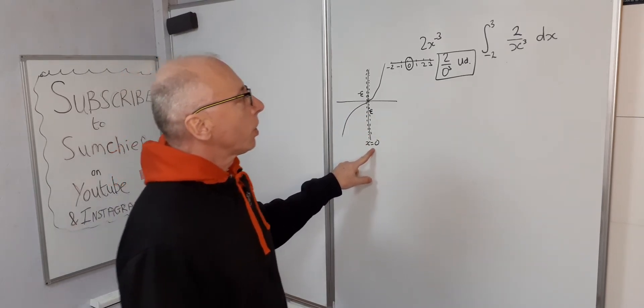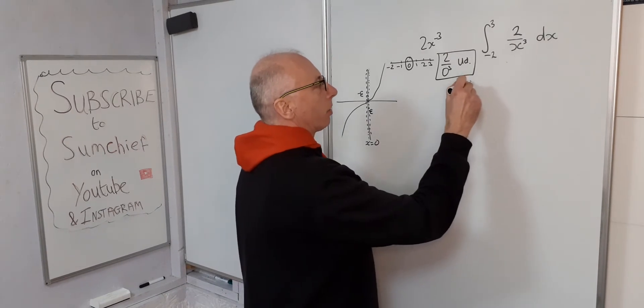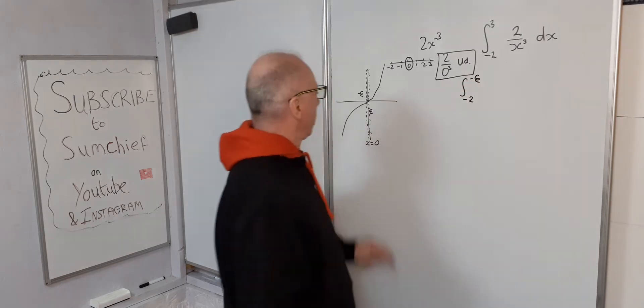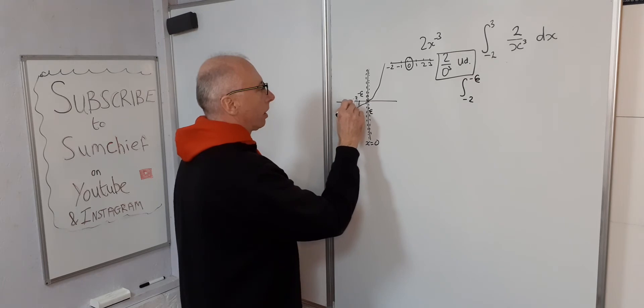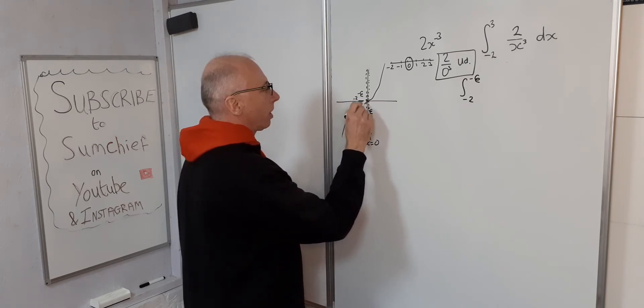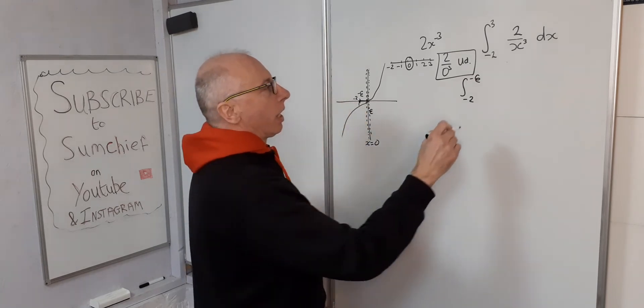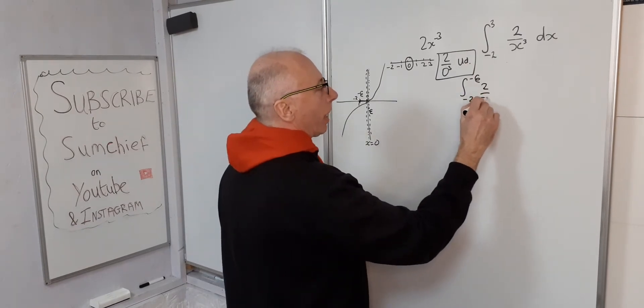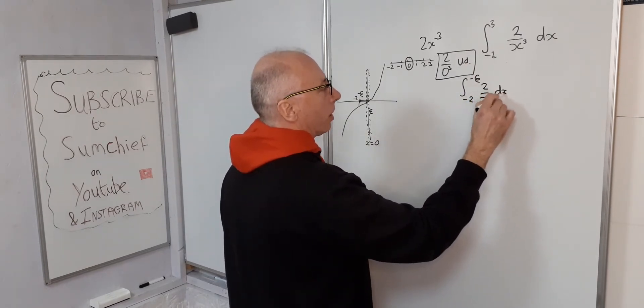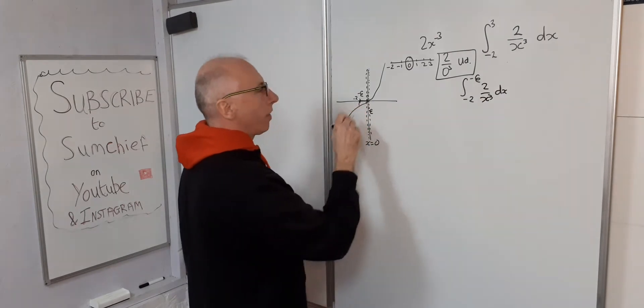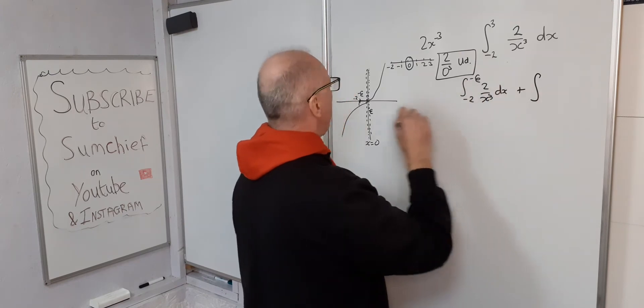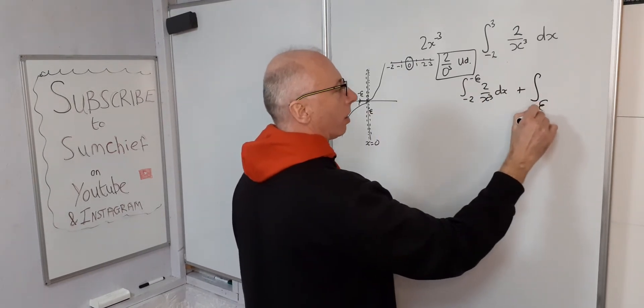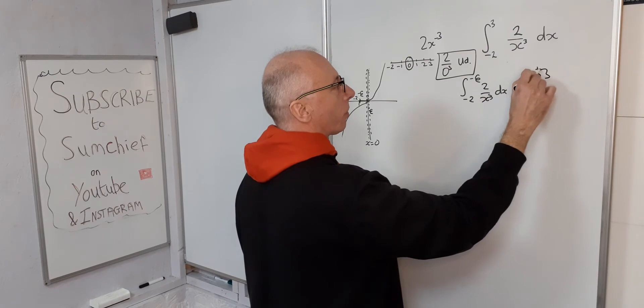Now we start off by writing this integral as integral from minus 2 to negative epsilon. So imagine minus 2 is somewhere here—that's minus 2, so we're interested in this bit. And then 2 over x cubed dx. So that takes care of that.